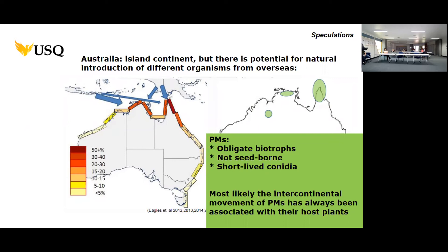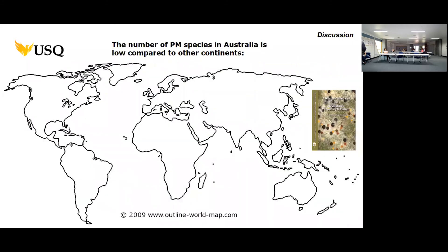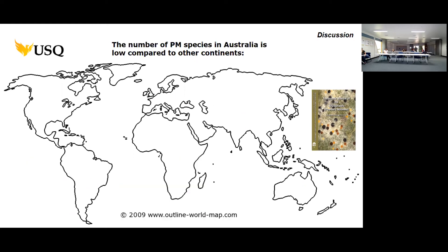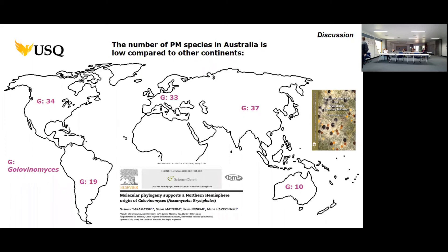Looking at species numbers worldwide, for the genus Erysiphe: Asia has around 340 species, Europe has 100, North America has 100, South America — less surveyed — has 52, and Australia has only 17 based on our study. For another genus, there are 37 in Asia, 33 in Europe, and only 10 in Australia. The paper contains detailed biogeographic analysis.